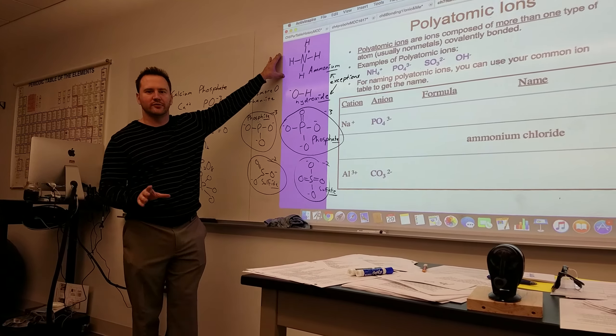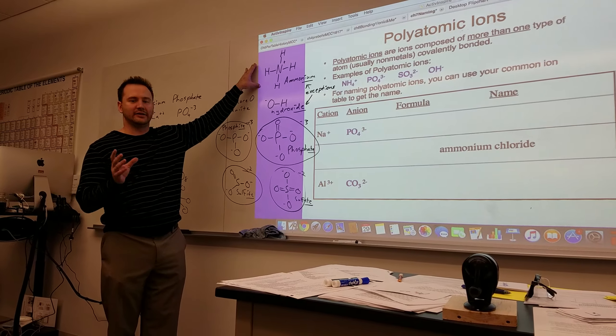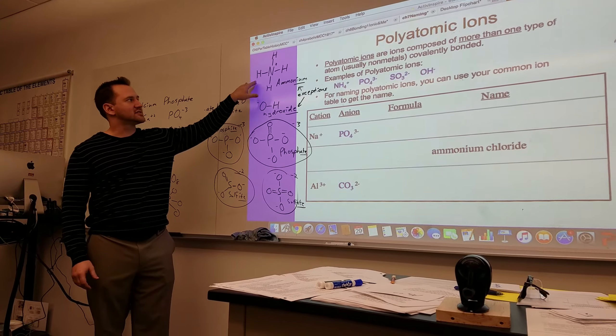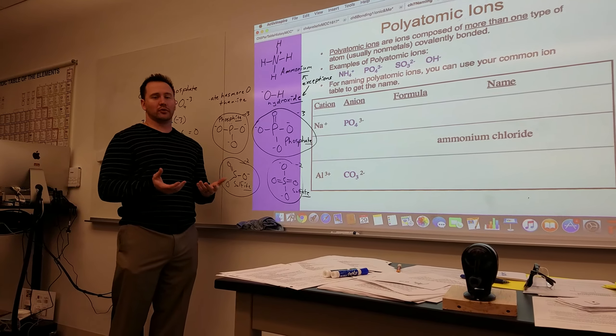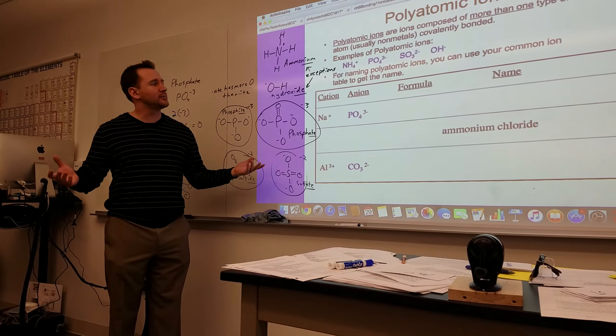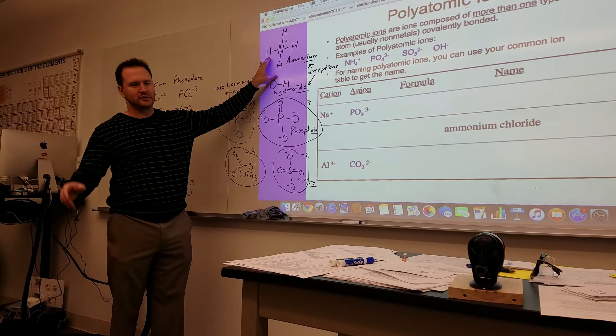Ammonium is the only positive one. It's the only cation that's a polyatomic ion. It consists of four hydrogen atoms covalently bound to a nitrogen. It has more protons than electrons and therefore has a positive one charge. We'll get into why that is in the next unit.